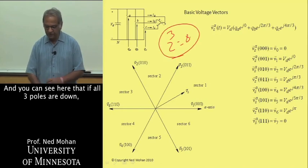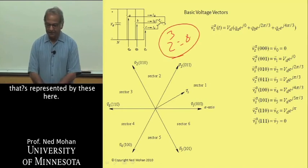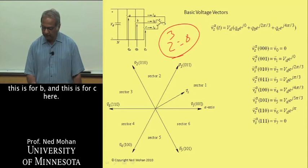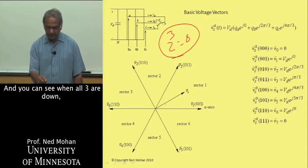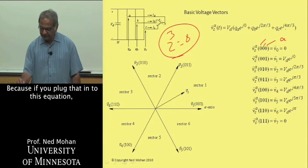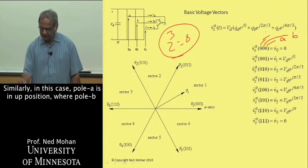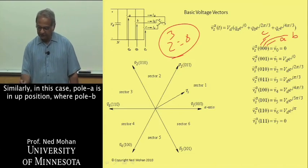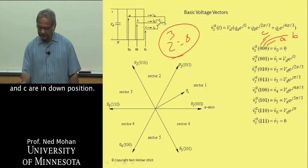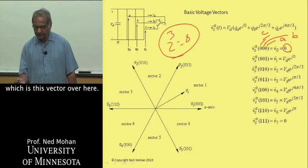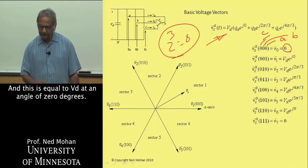There are eight basic voltage vectors that can be produced here. If all three poles are down, that's represented by these here. This bit is for A, this is for B, and this is for C. When all three are down, we have this vector V0 which has a value zero, because if you plug that into this equation, that's what we'll get.